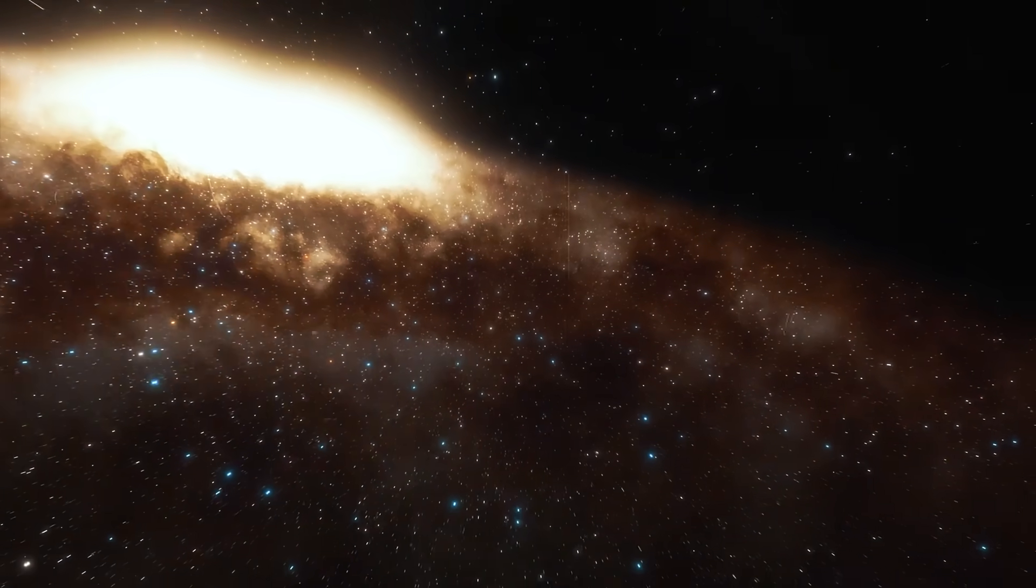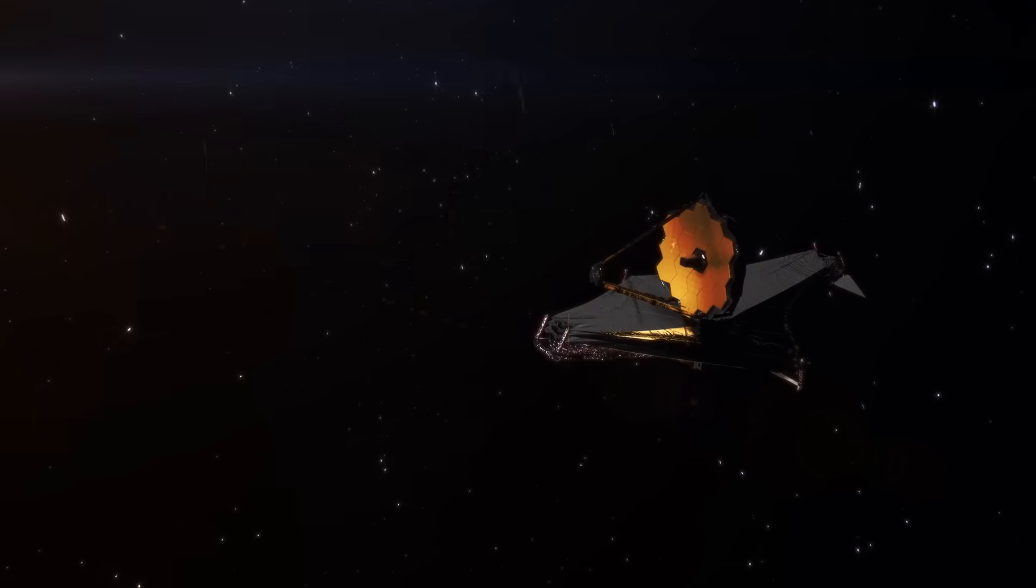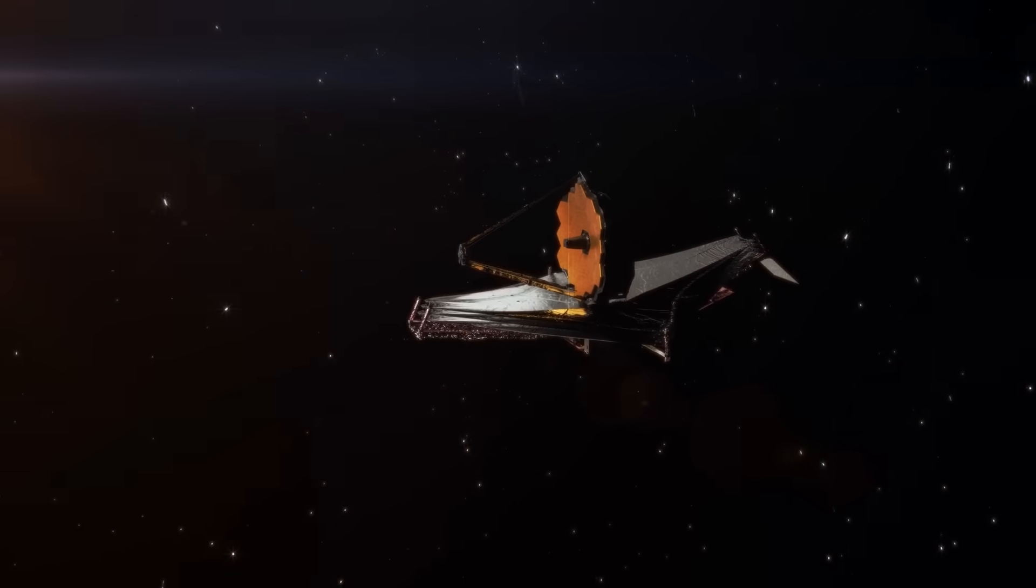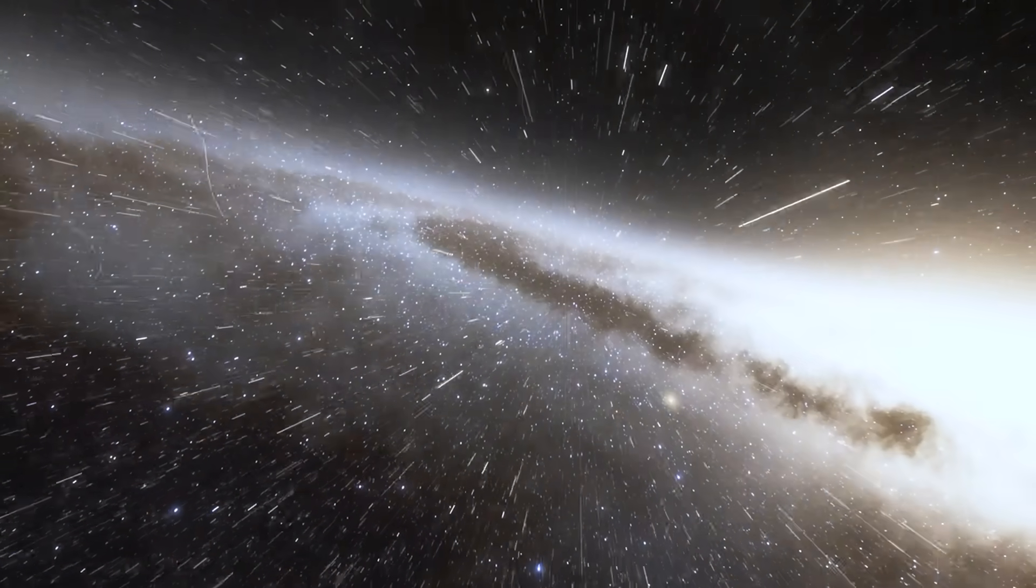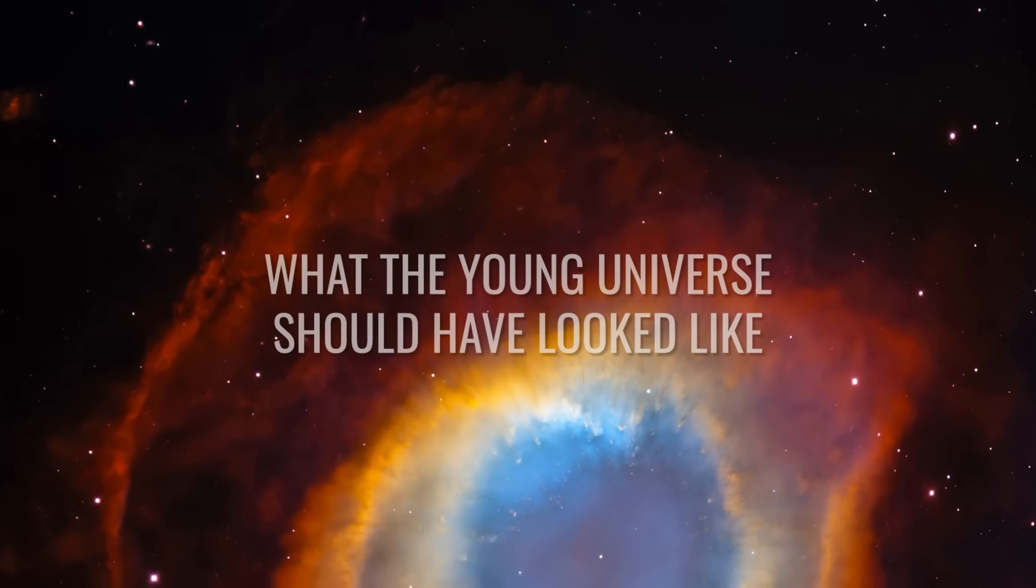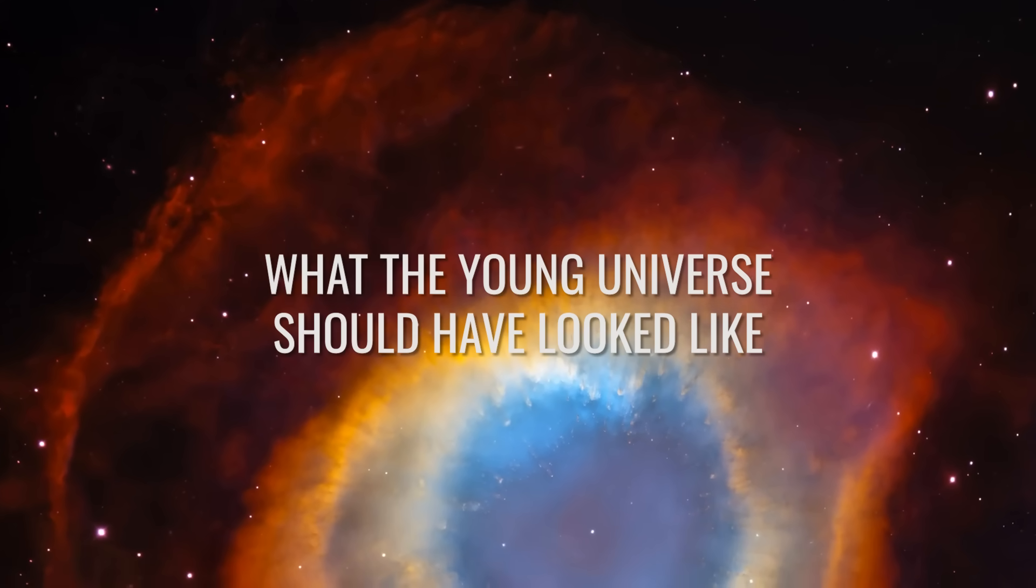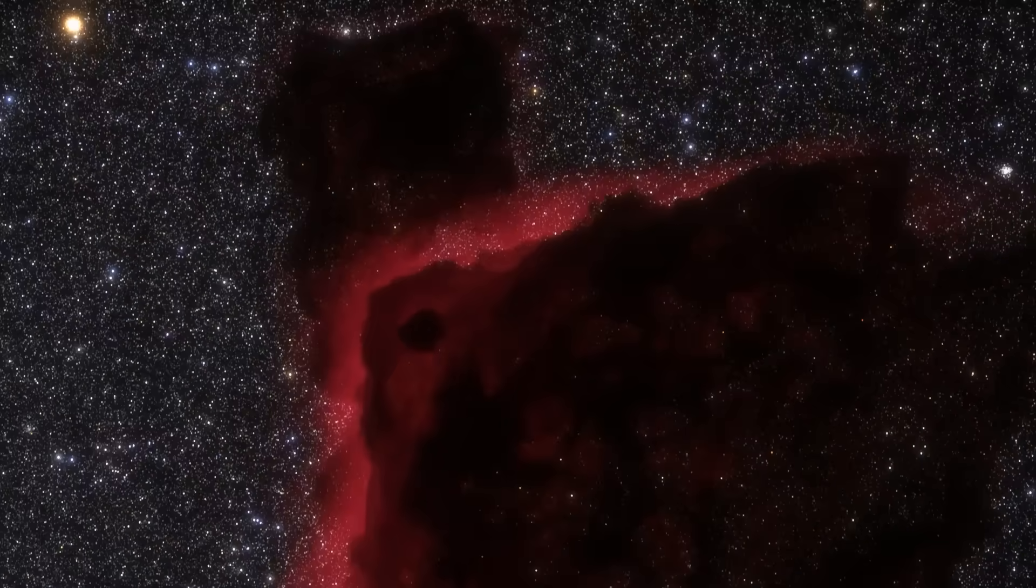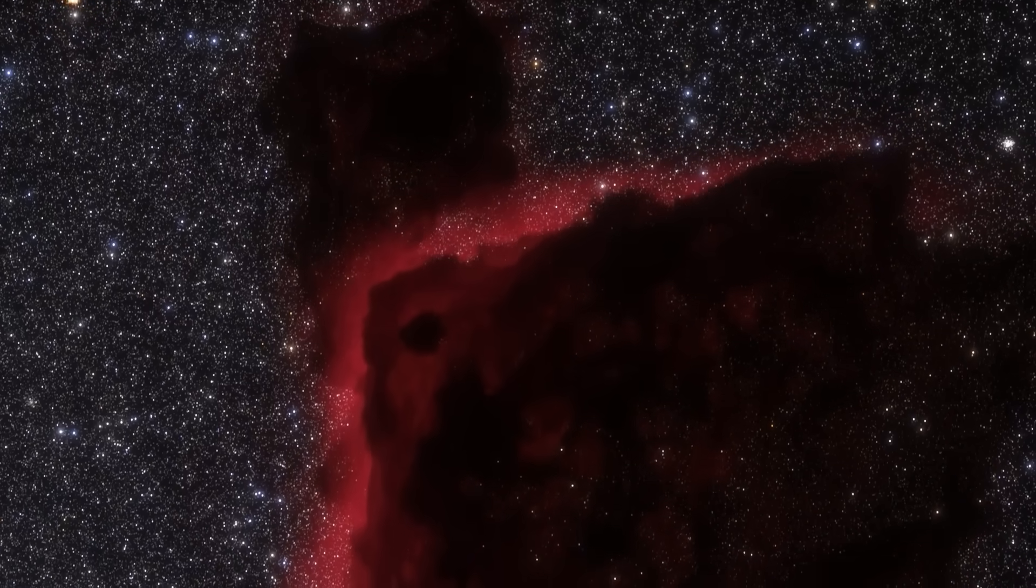By studying such remote structures, the James Webb Telescope opens a living window to long-gone eras of the cosmos. However, things get a little tricky when what Webb observes in the depths of space simply does not match our theoretical predictions. What should the young universe have looked like?